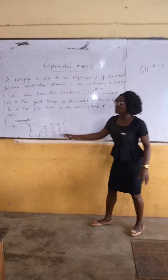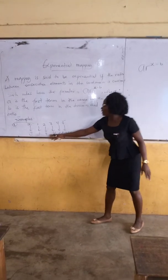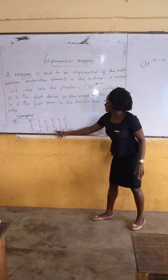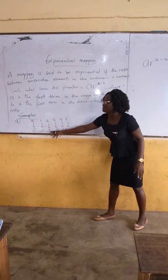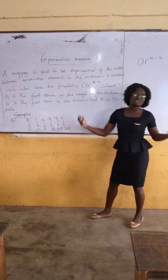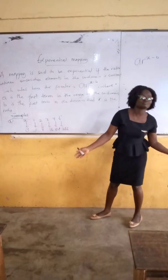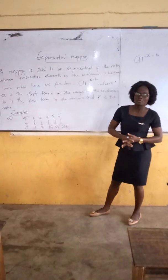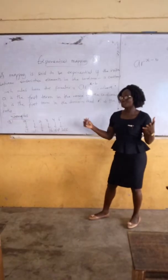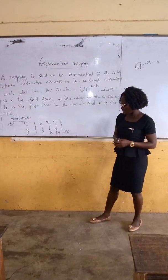This one is not linear. For example, 4 minus 1 is 3, and 16 minus 4 is 12, which is not constant. So the differences are not constant here.